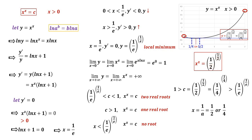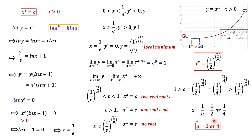When c equals (1/2)^(1/2), there are two roots: x equal to 1 over 2 and x equal to 1 over 4. Since x equals 1 over a, we have a equal to 2 or a equal to 4. These are the only two positive roots of the original equation.